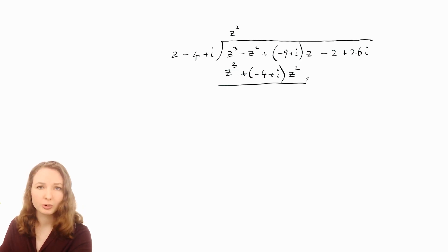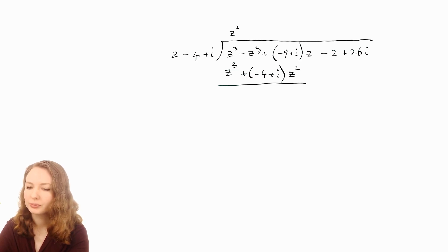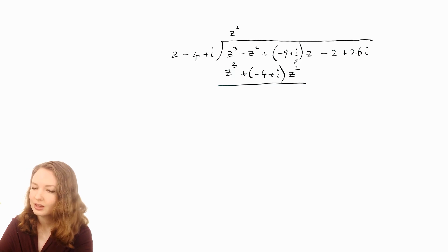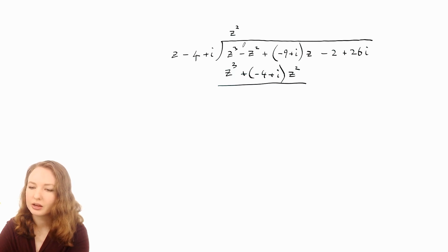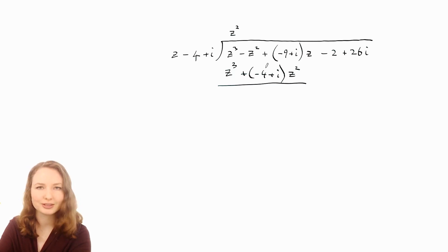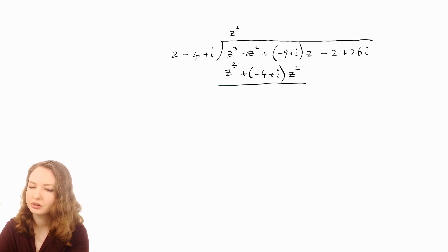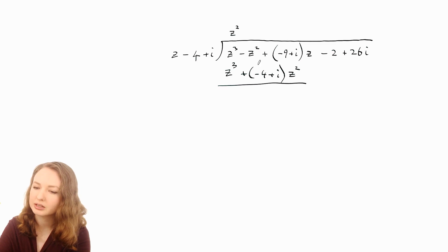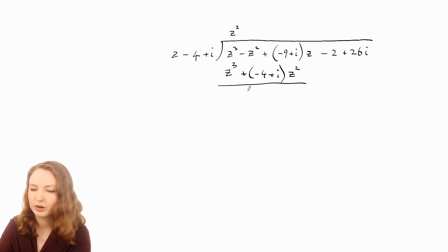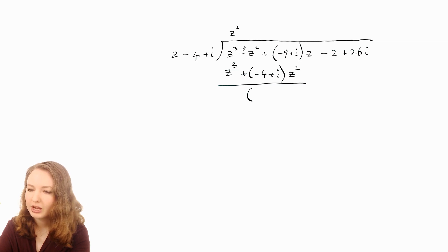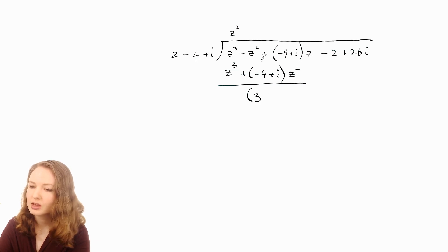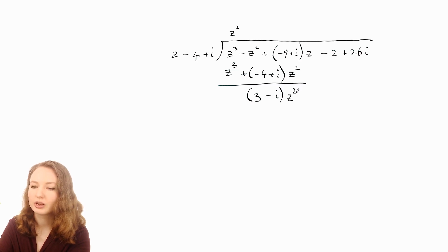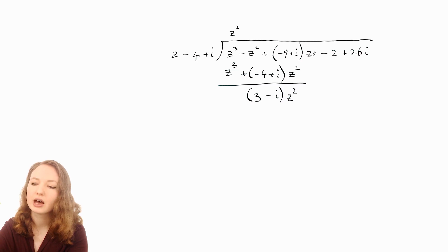Alright, and then just like with regular long division we want to do this minus this. So the Z cubed minus Z cubed is just zero, so those cancel. Then we've got a negative Z squared, and you want to just concentrate on this coefficient here being negative 1, and then we're subtracting this, so I'm going to put it in brackets again — negative 1 minus negative 4 is the same as negative 1 plus 4, so 3. And then we're also subtracting the i, so negative i, and that's all times Z squared, and then you want to bring down the next term as well.